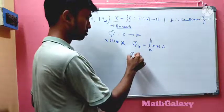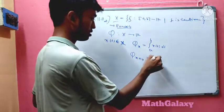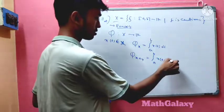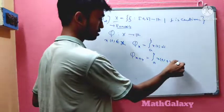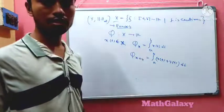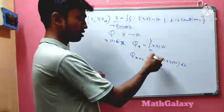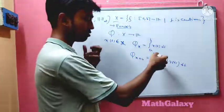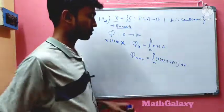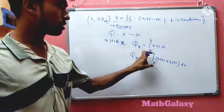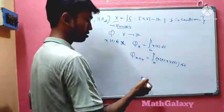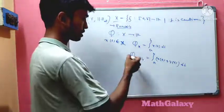We can clearly see that φ is linear, because φ(x + y) equals the integral of x(t) + y(t) dt. Since x and y are continuous from [a,b] to ℝ, they are bounded on this closed interval, and the measure of the domain is b minus a. So φ is clearly linear.